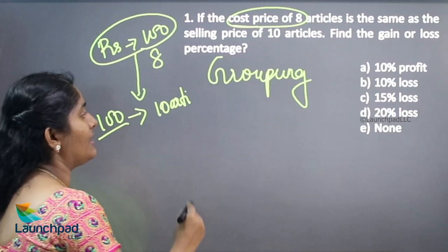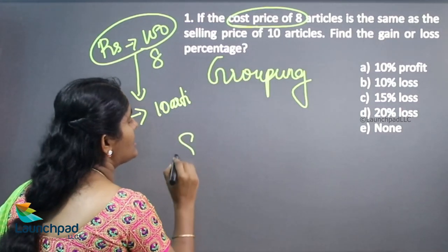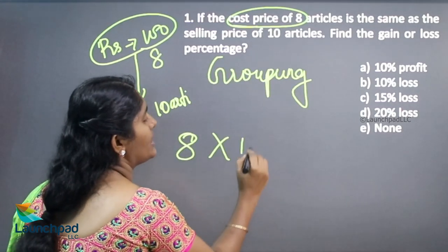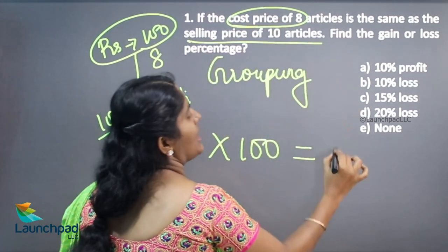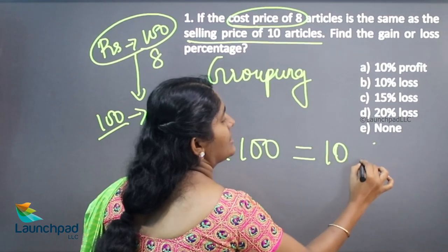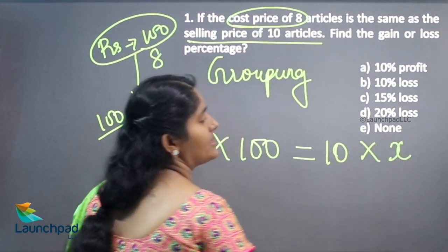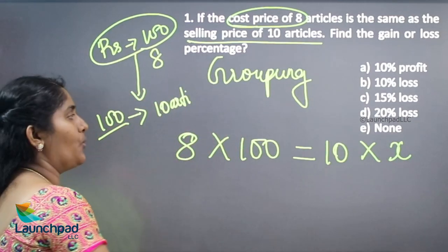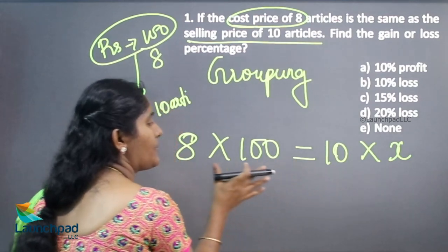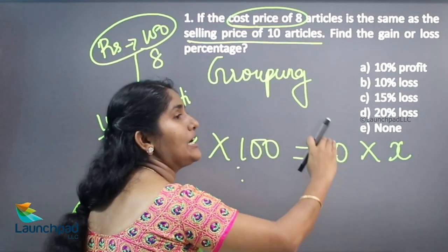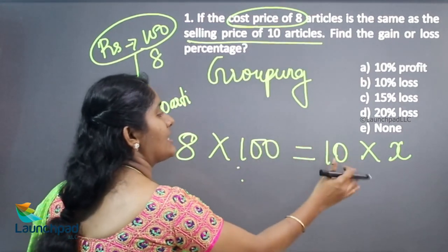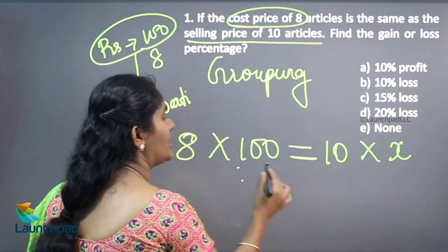So we can equate this method, that is our cost price is always denoted 100 percentage, which is equivalent to selling price of 10 articles by how much percentage. So both values are same, here spending cost price amount is equivalent to while selling 10 articles. So both are same, then only I am equating here.